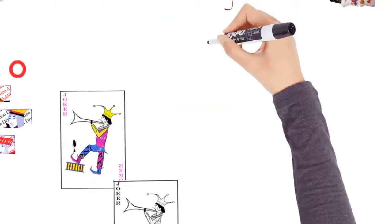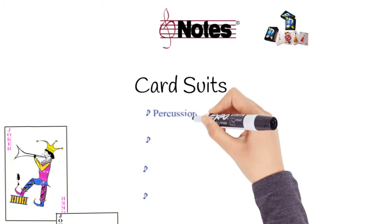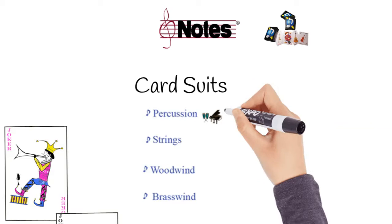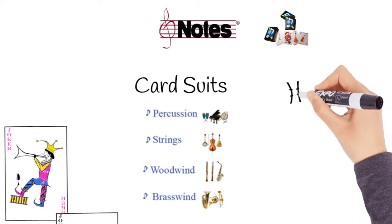Notes uses the four families of instruments - strings, woodwinds, brasswinds, and percussion - as its suit families.